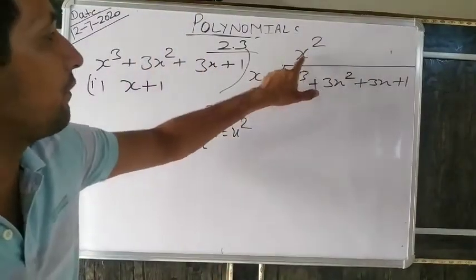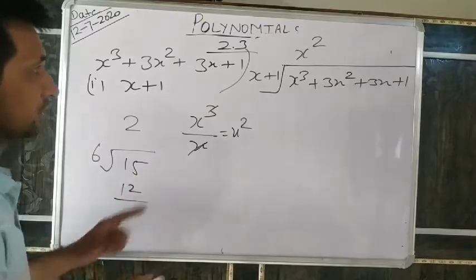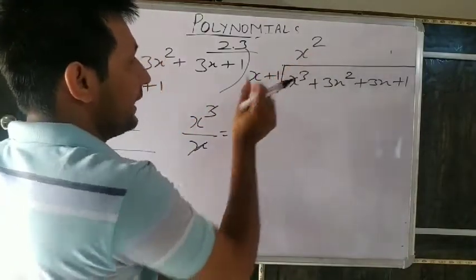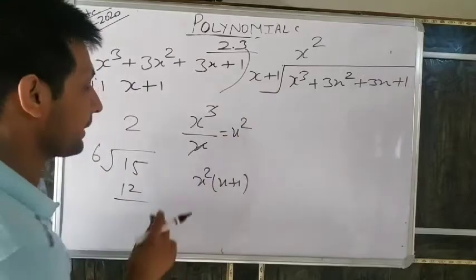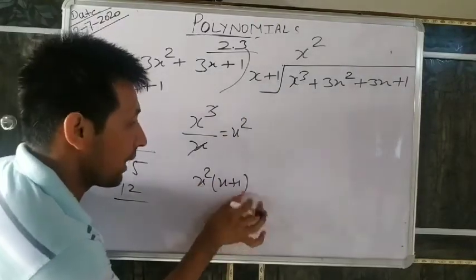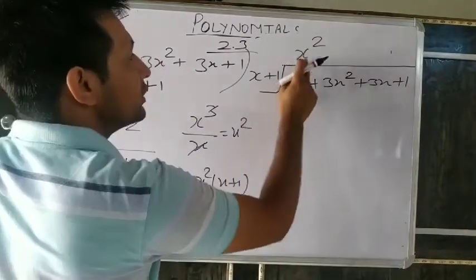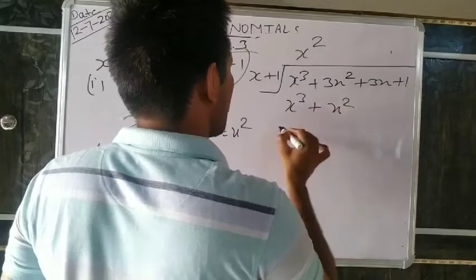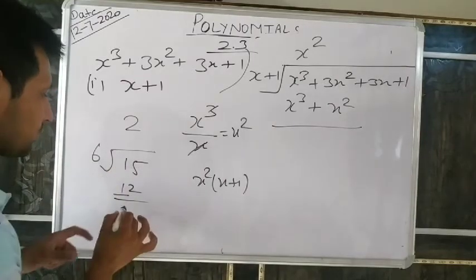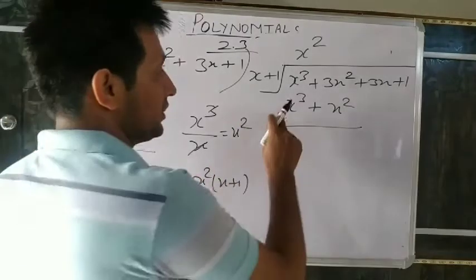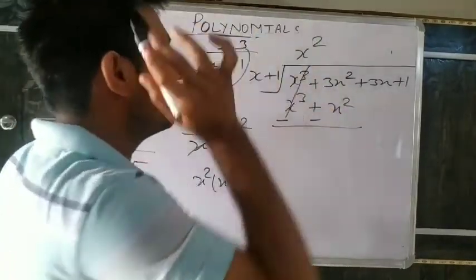Now multiply x² by the divisor (x+1): x² times x gives x³, and x² times 1 gives x². Always we subtract — change the sign: positive becomes negative. So x³ minus x³ equals zero. What remains is 3x² minus x² equals 2x².